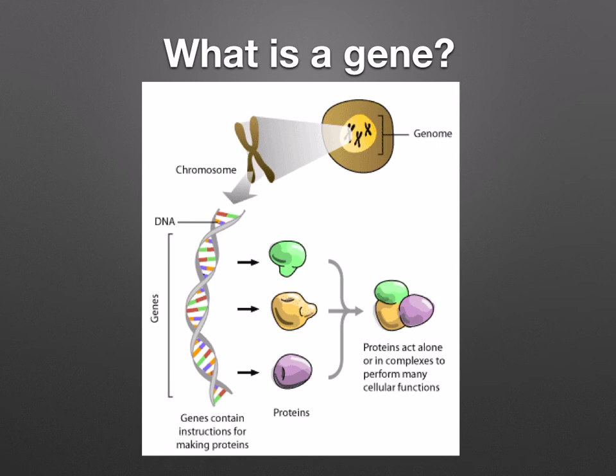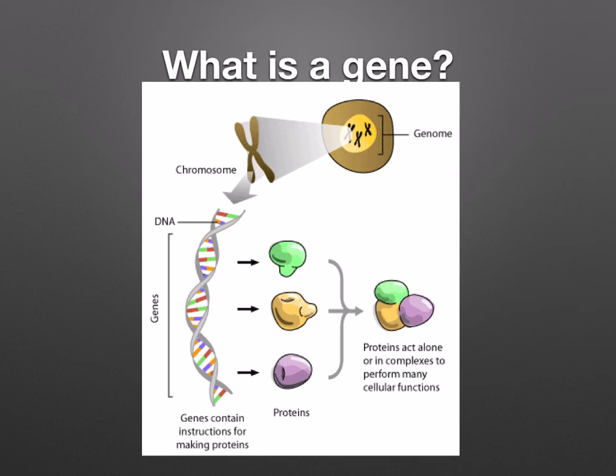In other words, genes determine the nature and development of all organisms. If a gene is a sequence of nucleotides that determines a sequence of amino acids, how does this happen? What is the code?